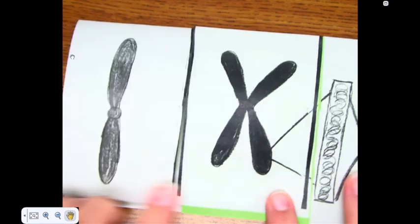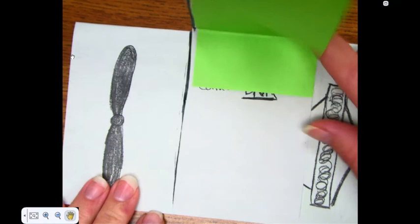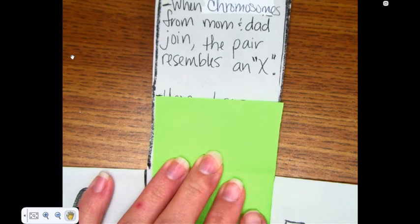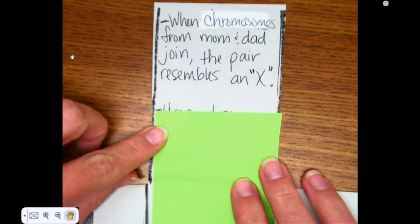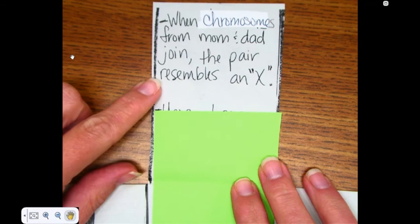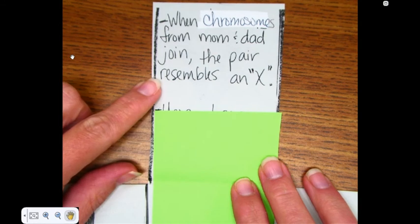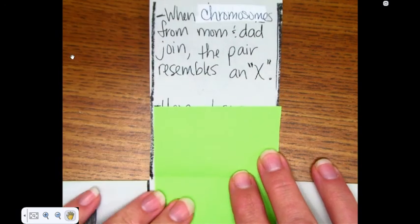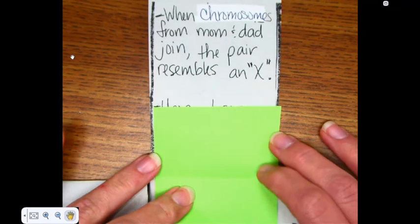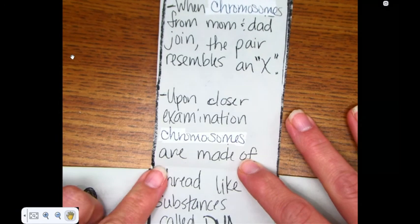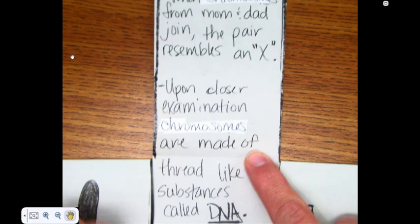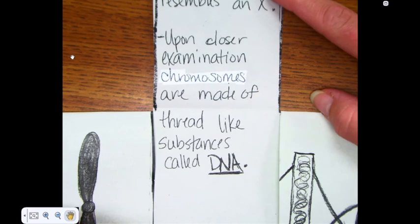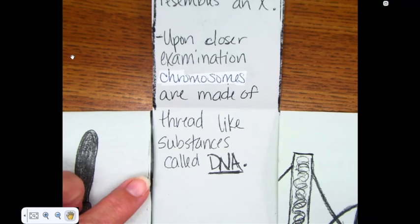And open the second one. So we moved from our single chromosome to our chromosome pair. When chromosomes from mom and dad join, the pair resembles an X. And this X is what we drew on the front. Upon closer examination, chromosomes are made of thread-like substances called DNA. And that closer examination takes a very powerful microscope.